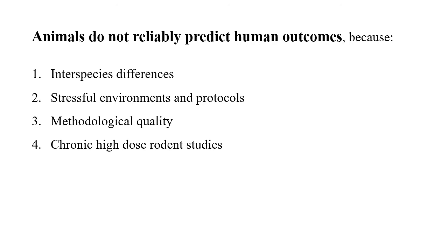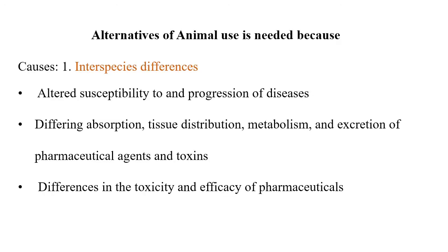For example, a pig that lives in a very dirty environment still has limited susceptibility to infection. Similarly, rodents like mice and rats live in very unhygienic conditions and eat unhygienic food but are still able to survive. This indicates special qualities of animals that are not similar to humans. The interspecies differences include altered susceptibility to and progression of disease.